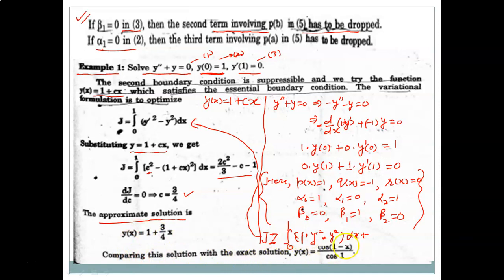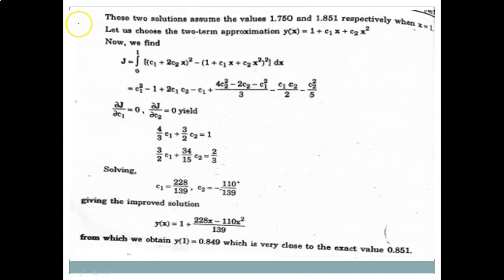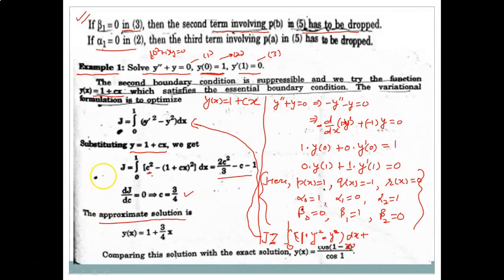Therefore the approximate solution is y(x) = 1 + (3/4)x. Comparing with the exact solution (obtained via the auxiliary equation method, giving a solution in terms of trigonometric functions), at x = 1 the approximate solution gives 1.750 while the exact solution gives 1.851.